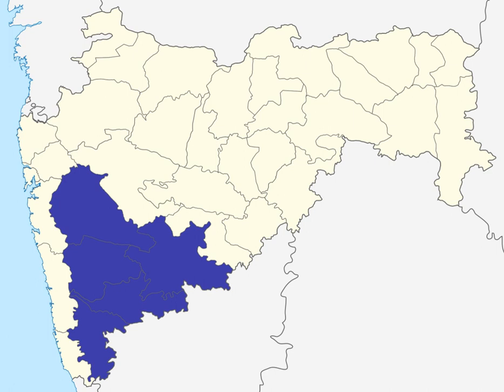The districts of Pune Division are: Sangli, Pune, Kolhapur, Satara, and Solapur.